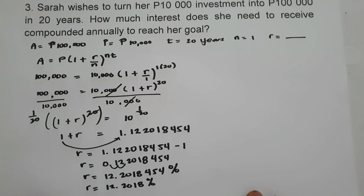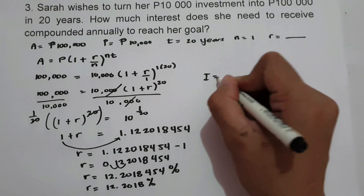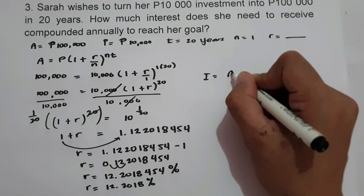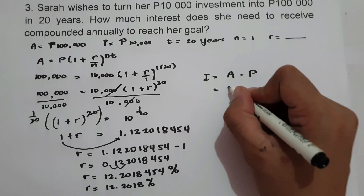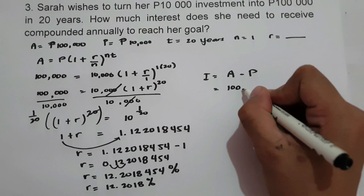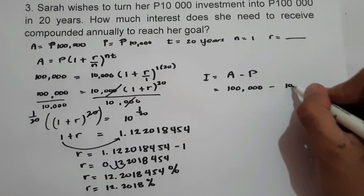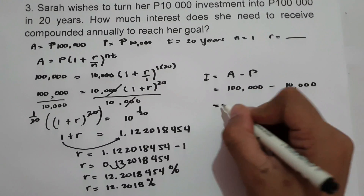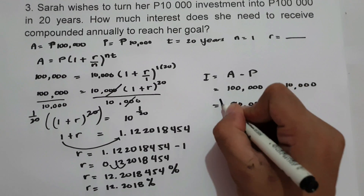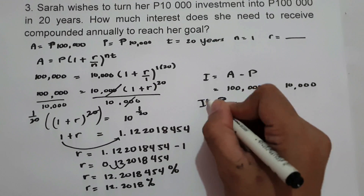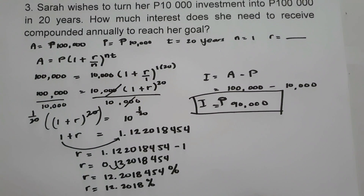Now let us find the interest. Interest equals future value minus the principal. That is 100,000 minus 10,000, which equals 90,000 pesos. This will be the interest after 20 years.